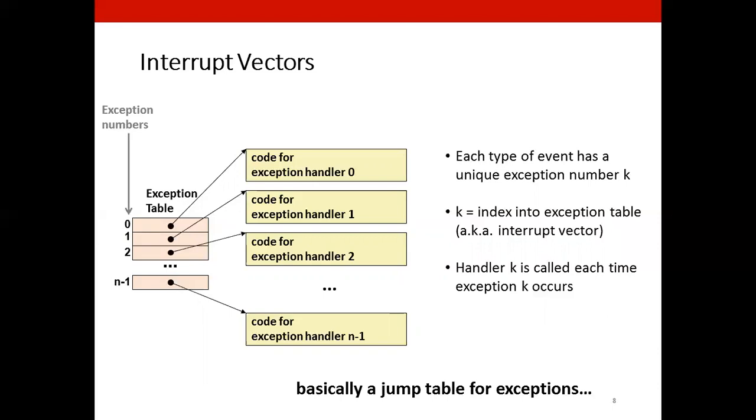So long story short, the interrupt vector is just a table that is indexed by the exception number. And the contents of this table is a pointer to the first instruction of the block code that deals with that exception. So it is an interrupt jump table.